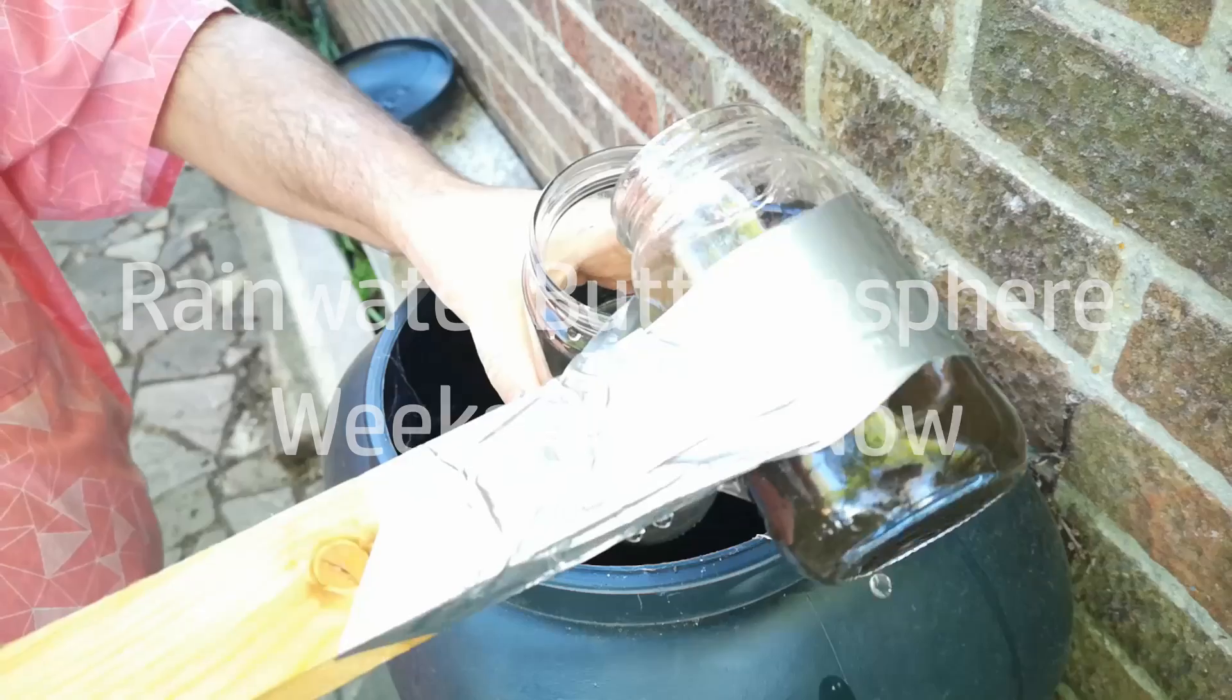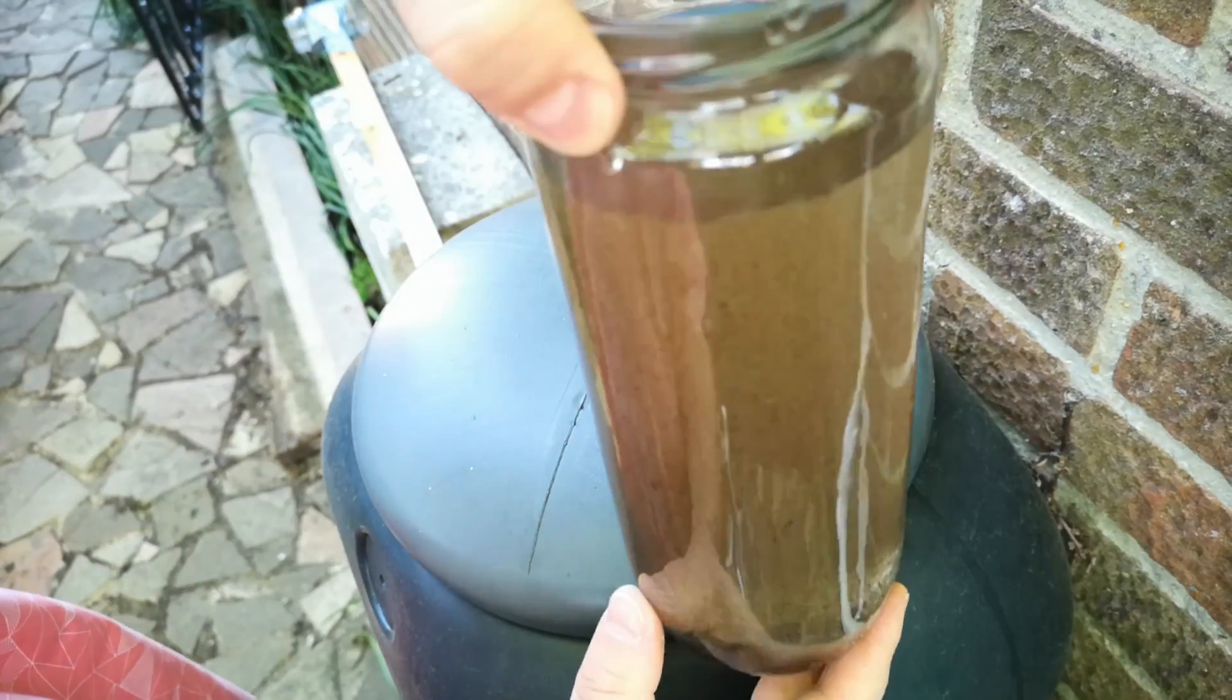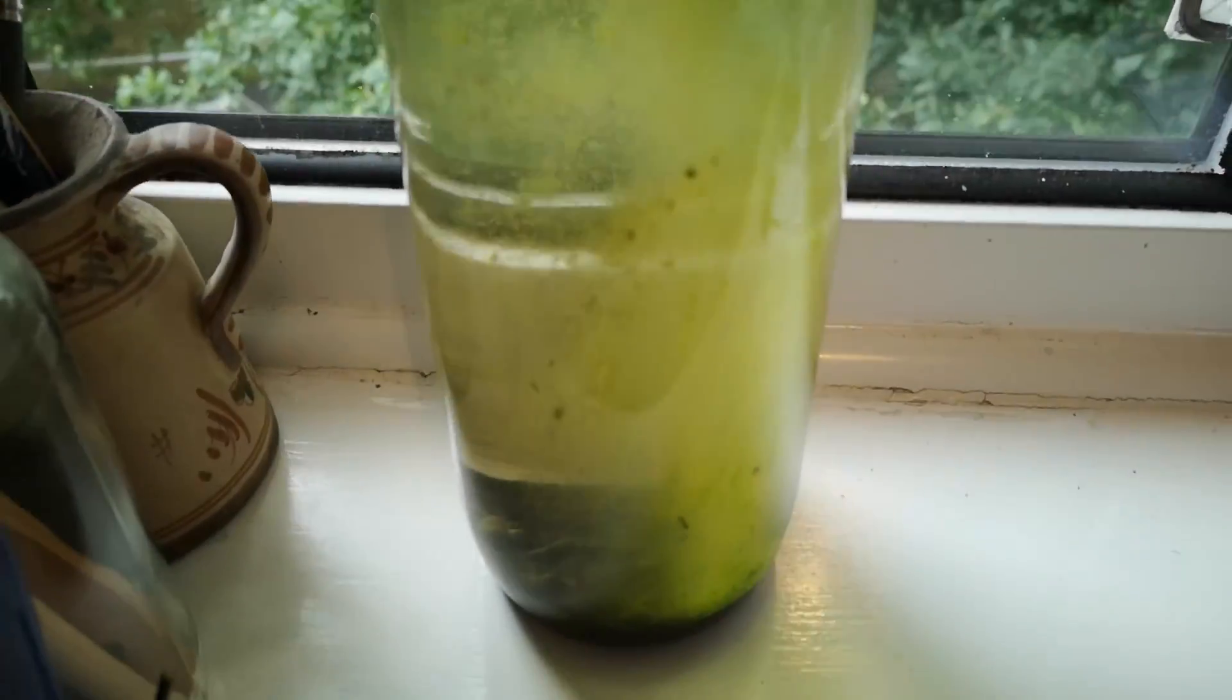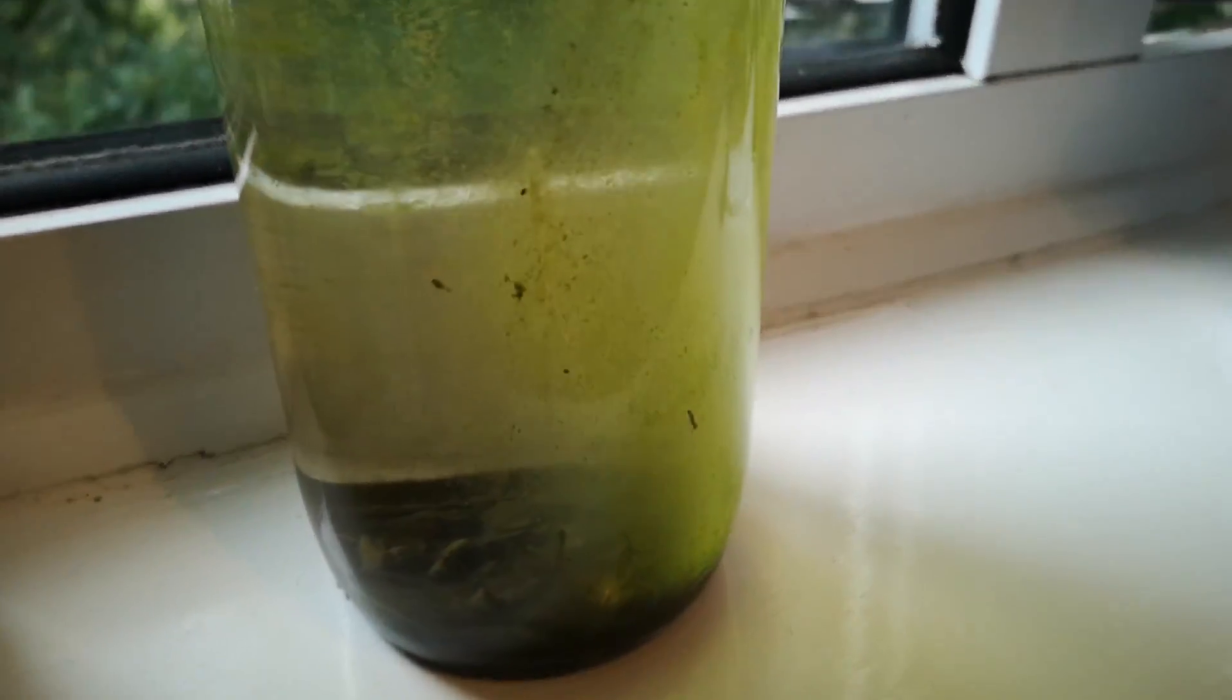So the project began on the 16th of April and at the time of recording this it's the 9th of July. Let's take a look at how the ecosphere looks from the outside right now. In the 12 weeks since starting there's been a gradual increase of the amount of green that's visible inside the glass.